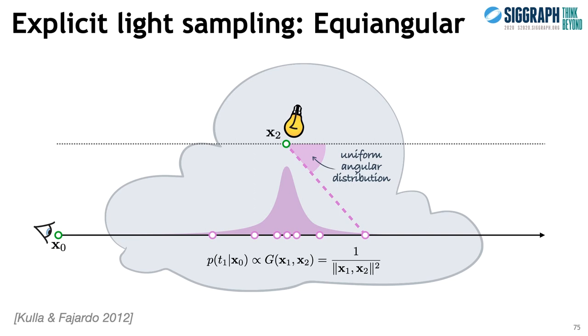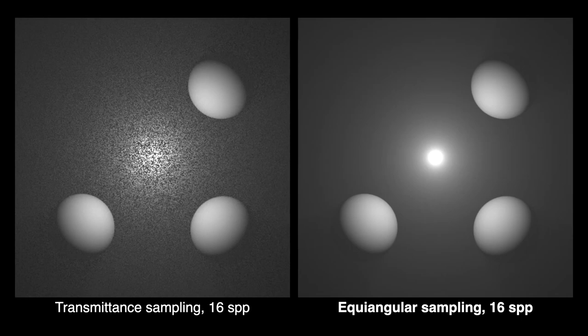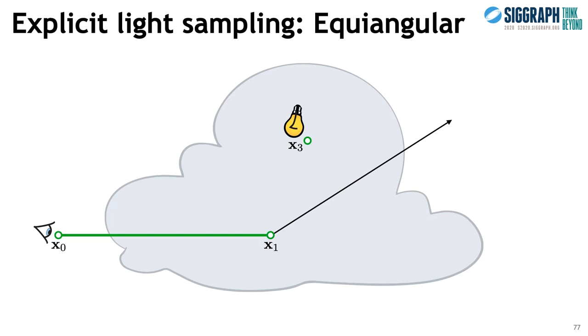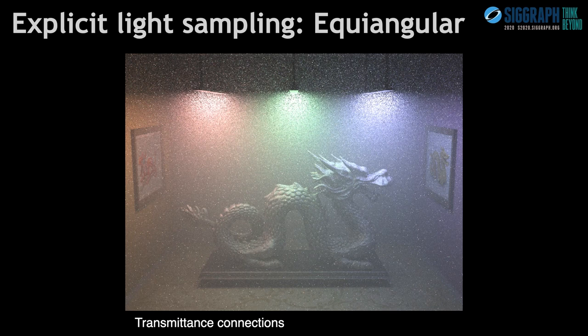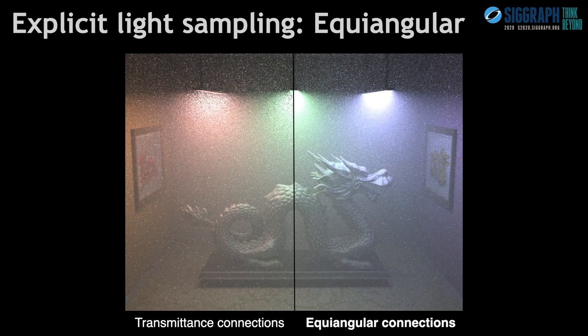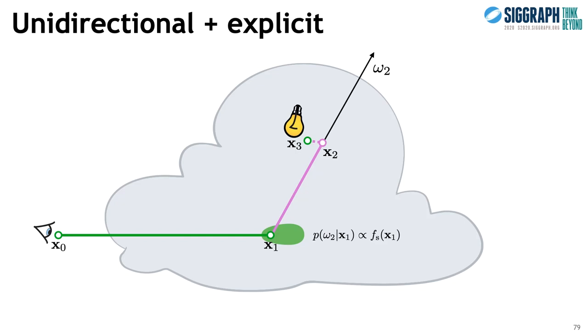Equiangular sampling can be a lot more efficient than transmittance sampling when the light source is embedded in the media. The technique can be used for light source connections along any path segment to render higher-order scattering. Here is an image rendered with classical transmittance sampling and equiangular connections — there is a noticeable noise reduction, especially in regions around the light sources. However, a lot of noise remains, with some pixels having extreme values. Even if we have importance sampled the geometry term along the ray, there remains a geometric singularity in the angle of the ray direction, and that direction is still sampled according to the local phase function independently from the location of the light source vertex.